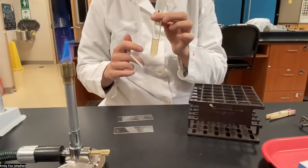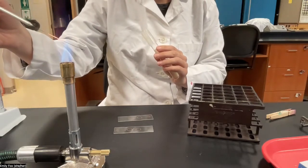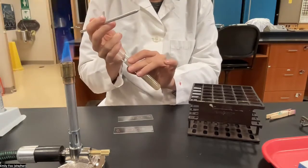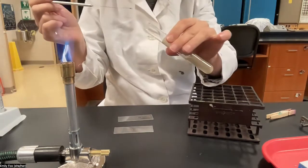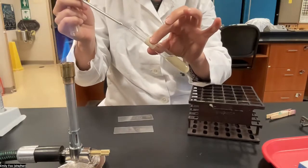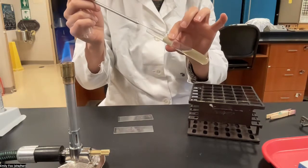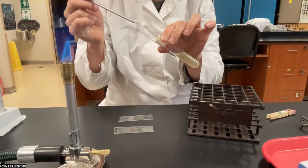Click the tube to resuspend the cells. And then we'll flame the inoculation loop. Pull the lid off. Remember to hold your tube at an angle to prevent spores from falling in it. And then we're going to wait 30 seconds with the loop inside the tube to let it cool down before we retrieve any culture.